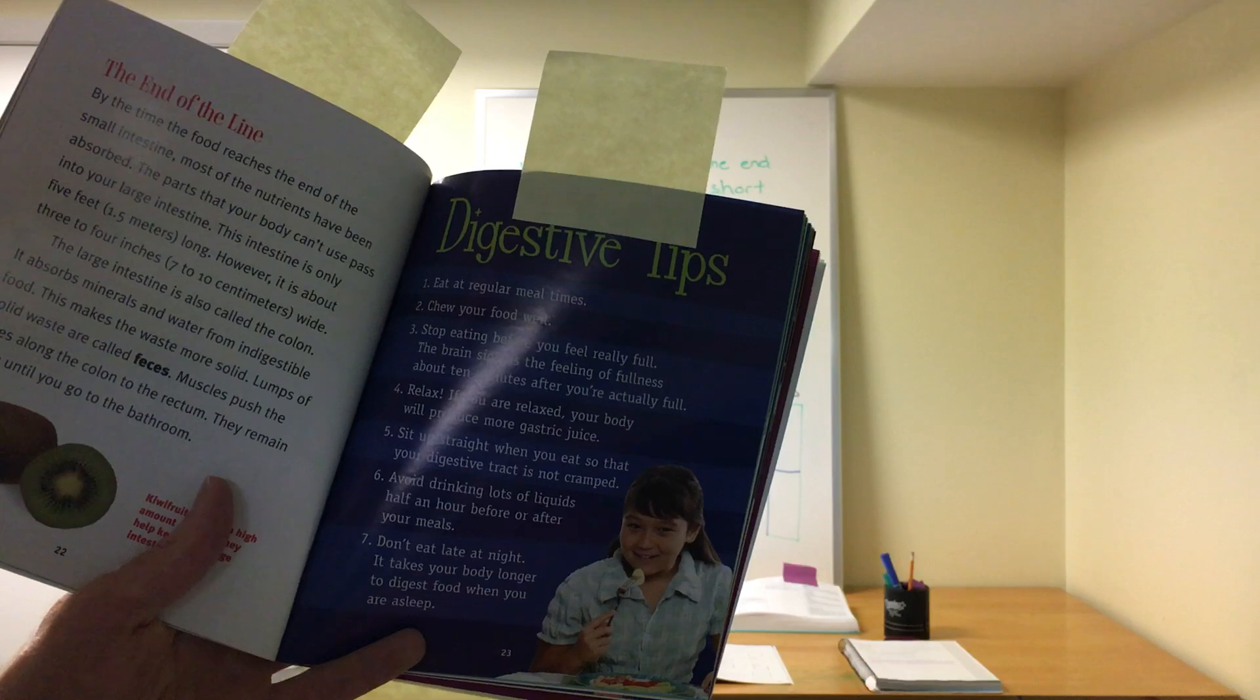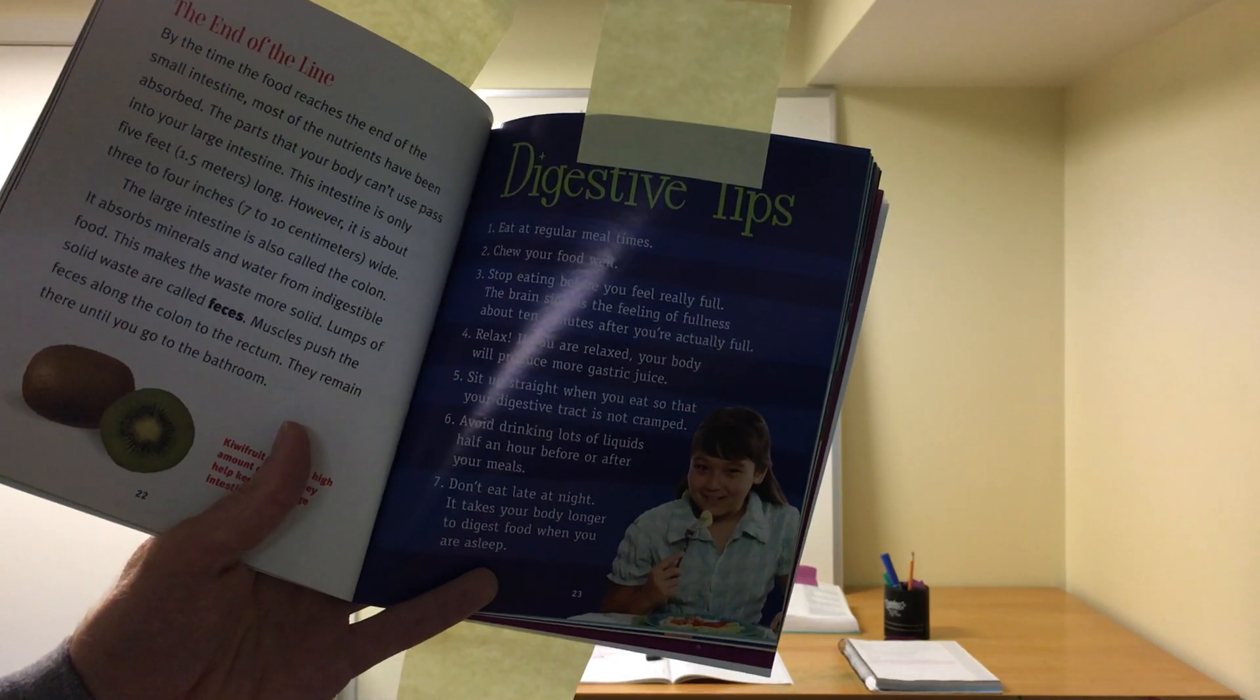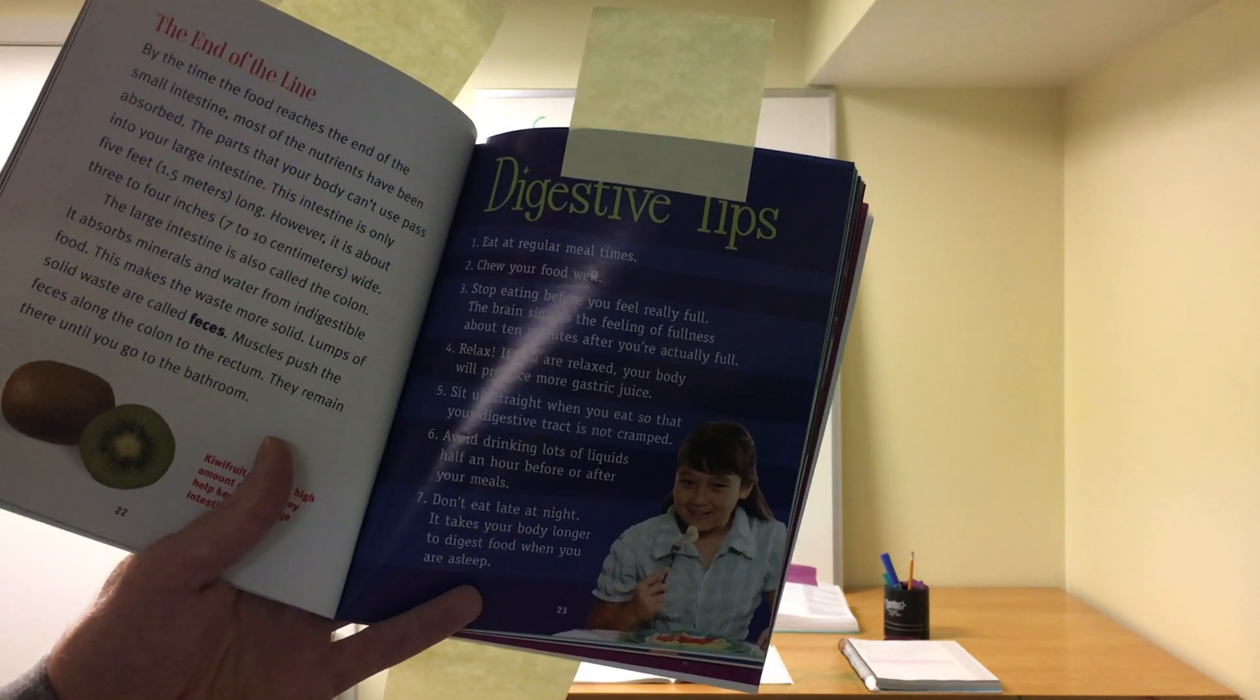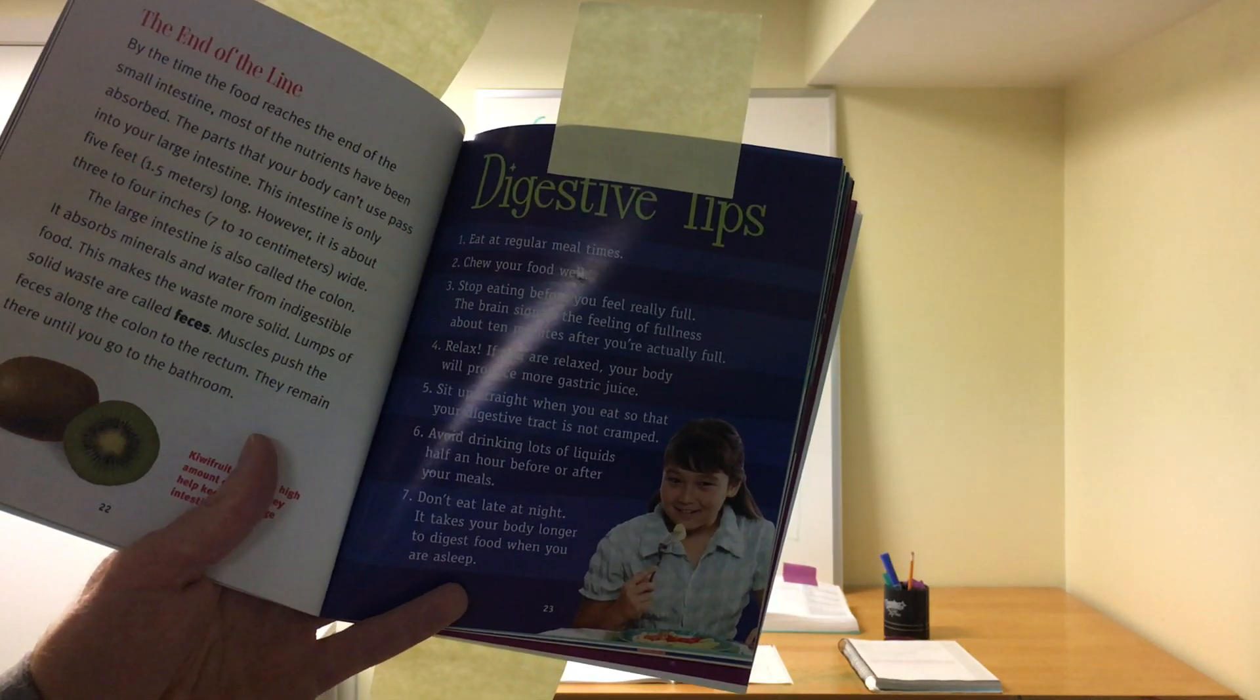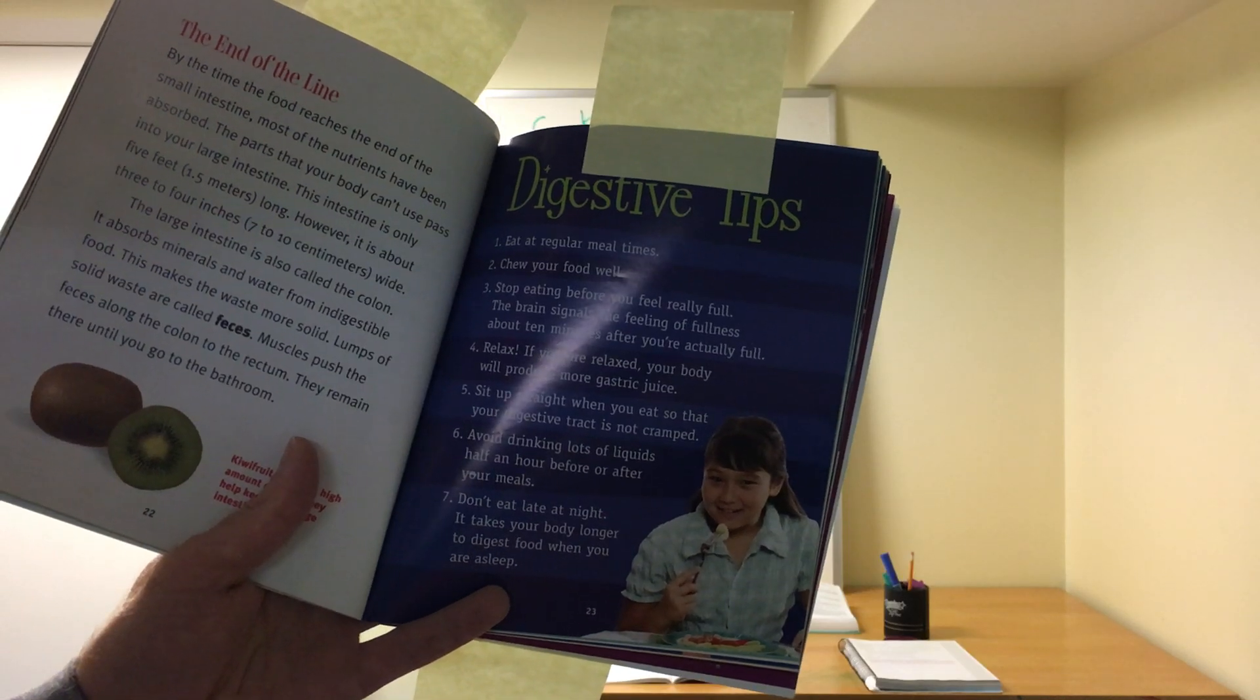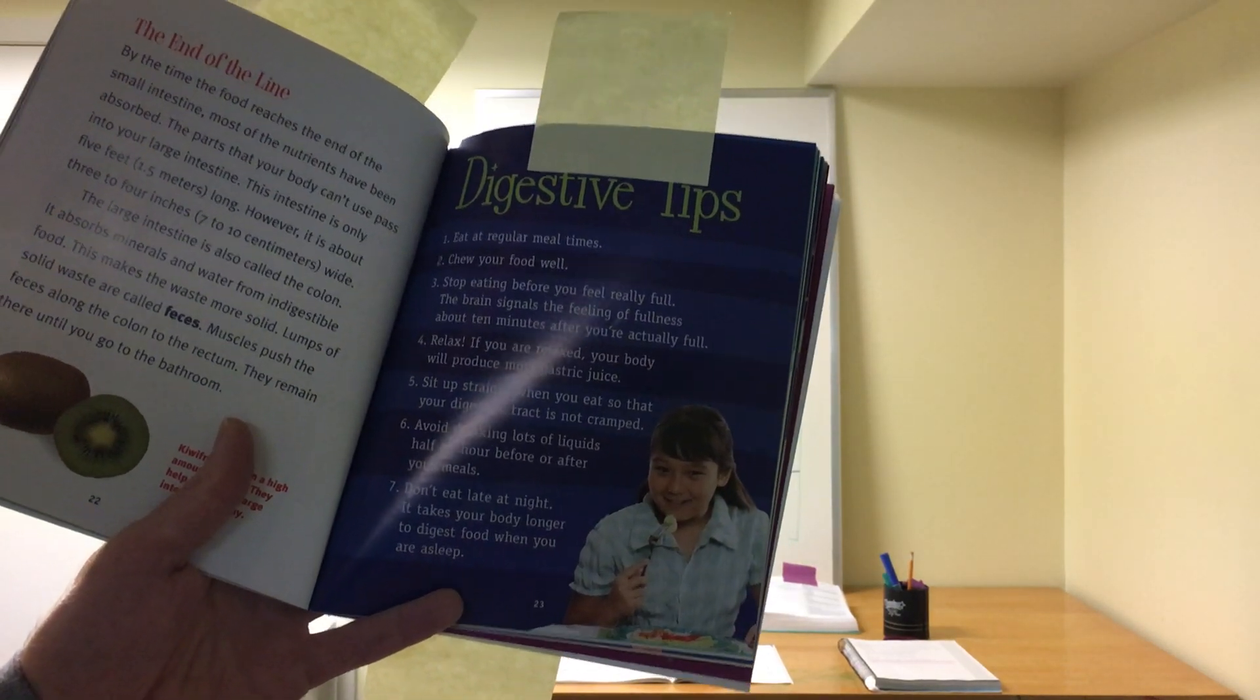Okay? So, here's some digestive tips. Eat at regular mealtimes, so breakfast, lunch, and dinner. Chew your food well. Don't swallow whole like a python. Stop eating before you feel really full. The brain signals a feeling of fullness about 10 minutes after you're actually full. Relax. If you're relaxed, your body will produce more gastric juice. Sit up straight when you eat so your digestive tract is not cramped, so don't lean over on a couch. Avoid drinking lots of liquids half an hour before or after your meals. And don't eat late at night. It takes your body longer to digest food when you are asleep.